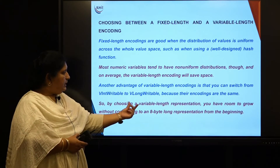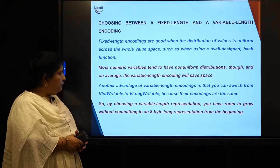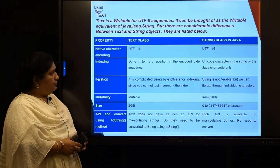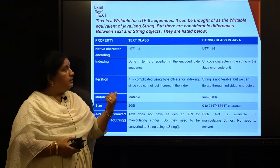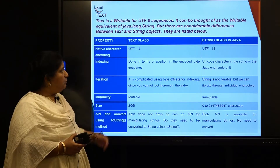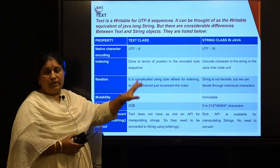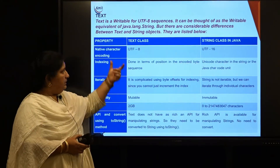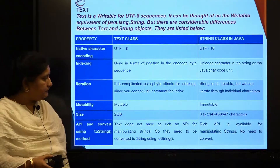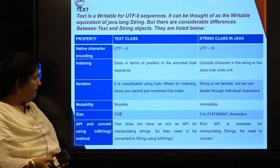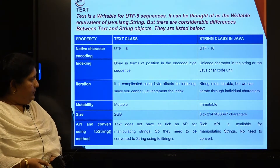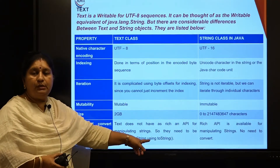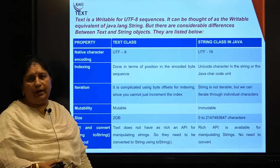By choosing variable-length representations, we have room to grow without committing to an 8-byte long representation. For text, Hadoop provides Text writable classes using UTF-8 encoding, which look similar to Java String classes but with slight differences — notably, when working with the Text type you may need to use the toString method for serialization, which is not required for String classes.